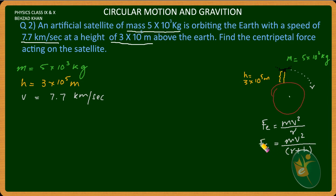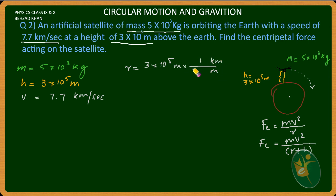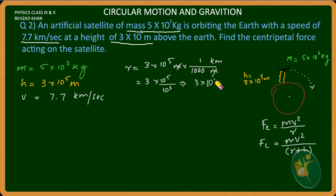We know the radius of the Earth r is 6400 km. Converting to meters: 6400 km times 1000 gives us 6400 times 10 to the power 3 meters, which is 6.4 times 10 to the power 6 meters.